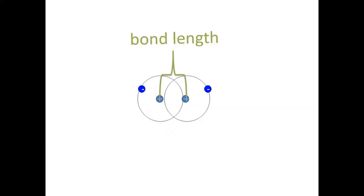Bond length means the distance between two bonding nuclei. Here we have two hydrogen atoms, and when they bond and are stable, the distance between their two nuclei is called the hydrogen molecule's bond length. In the case of the hydrogen molecule, H2, there's only one bond inside the molecule, and so there's only one bond length.